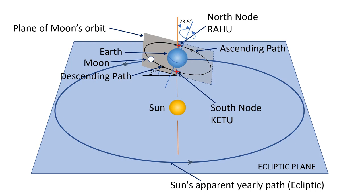Neptune, Uranus, and Pluto are not considered as grahas in Vedic Astrology, as these are too far away and hence exert negligible influence on the living beings on the Earth.